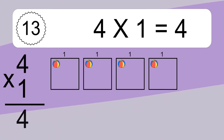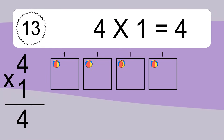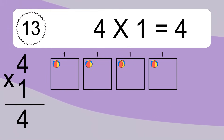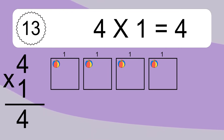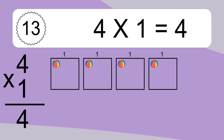4 times 1 equals what? 4 times 1 equals 4. We have 4 boxes and each box has 1 colorful ball inside. If you count all the balls in all the boxes together, you will have 4 times 1 balls. This equals 4 balls.